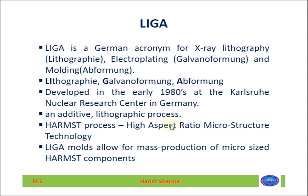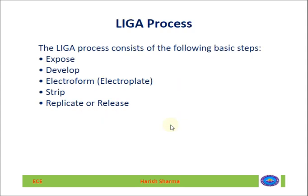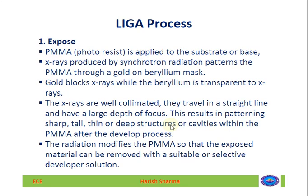LIGA was developed in 1980 at the Karlsruhe Nuclear Research Center in Germany. It is an additive lithography process and a HARM — High Aspect Ratio Microstructure Technology — that can be used for mass production of micro-sized high aspect ratio components. The LIGA process consists of the following base steps: expose, develop, electroform (electroplating), stripping, and then replicate or release.